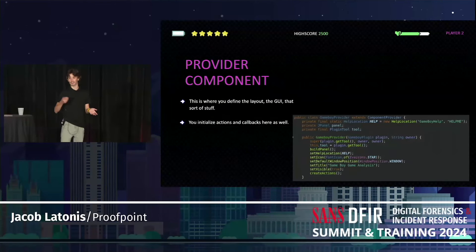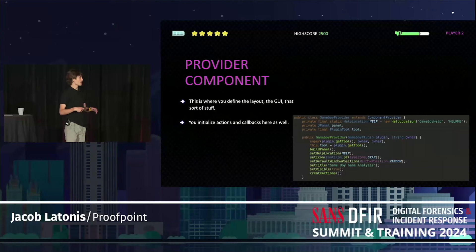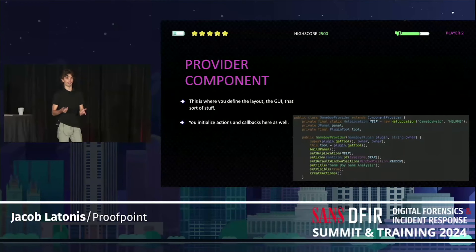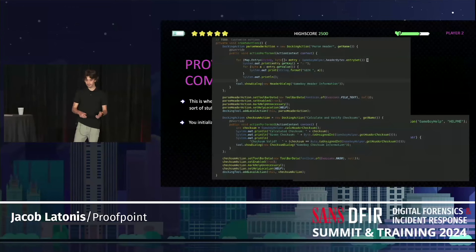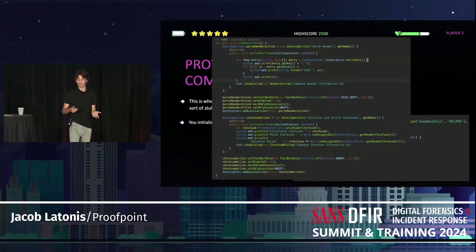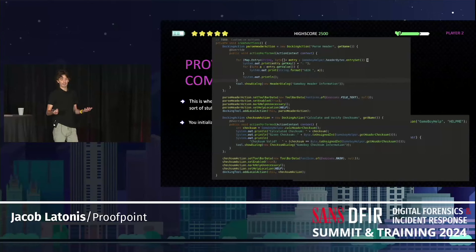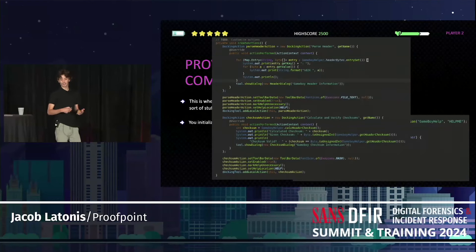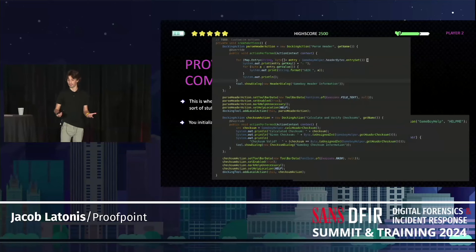The provider is where you define the layout, the GUI, all the pretty things. You also initialize actions and callbacks here. A callback means: if an action happens, you define what happens when that action happens — you give it a function or behavior you want triggered. The examples show how to initialize callbacks, and you can build what you want from them. One callback is to parse the header, another is to calculate and verify the checksum. Without the examples, I would have had to scrape through hundreds of pages of documentation. So definitely leverage the examples — it's not stealing, it's borrowing, and everybody does it.